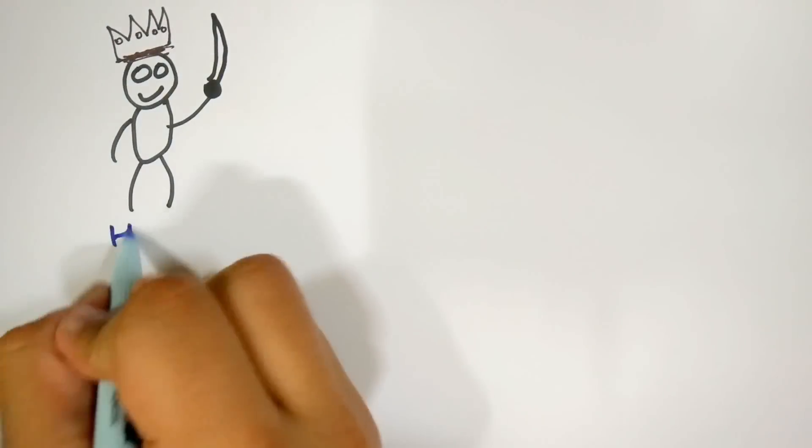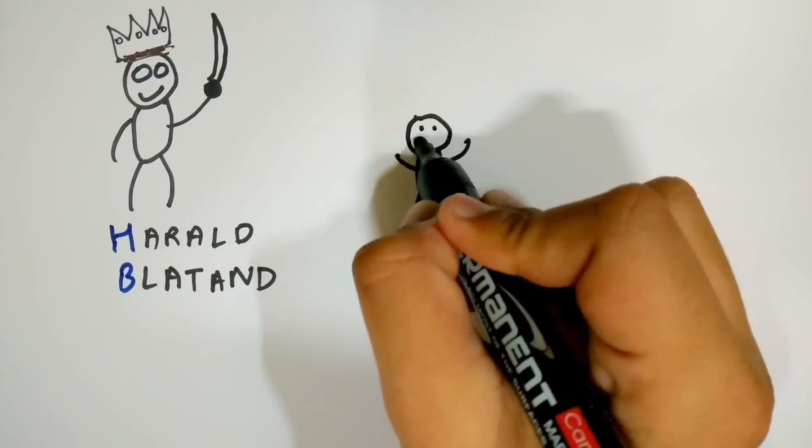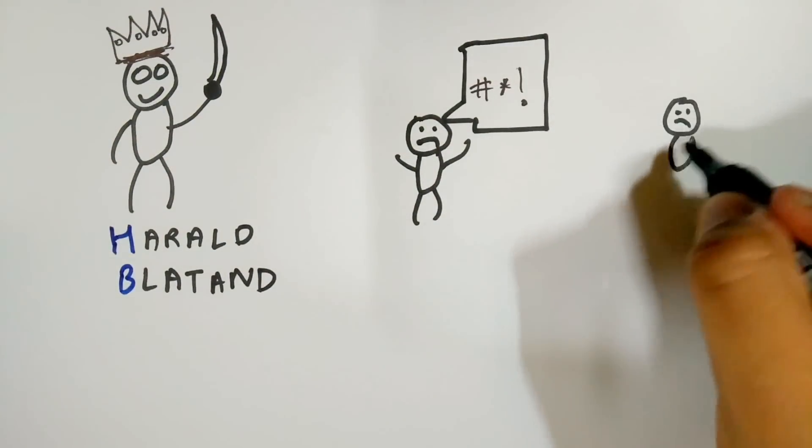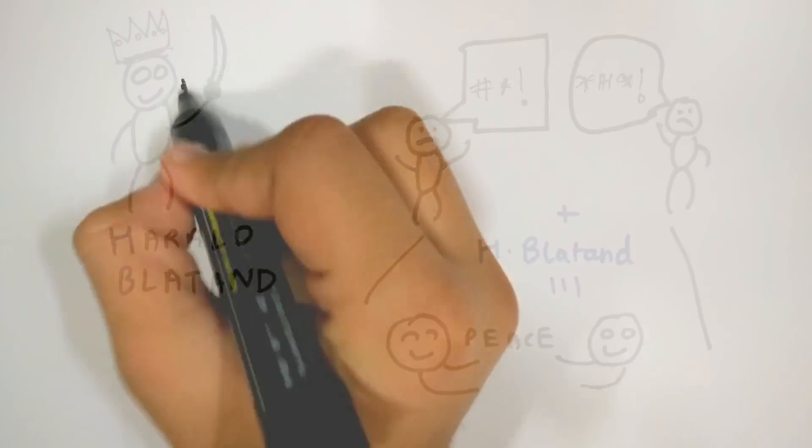Bluetooth is called Bluetooth because it is named after the Danish king Harald Blatend. This king had this unique ability to bring quarrelling people or tribes with feuds into calmly talking to each other and thus ending the argument.